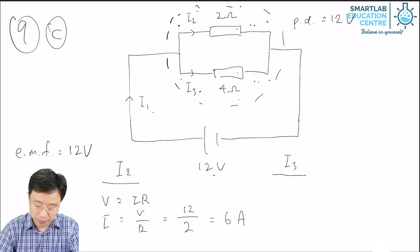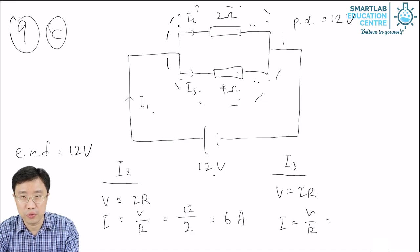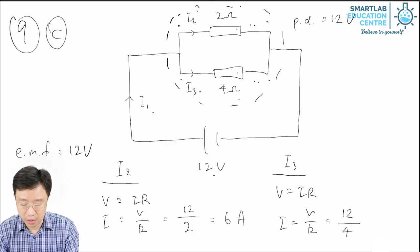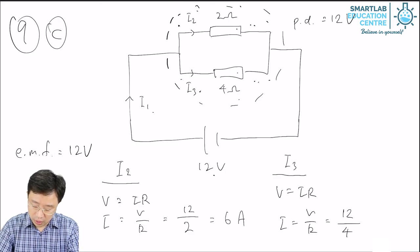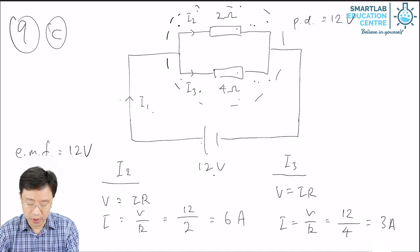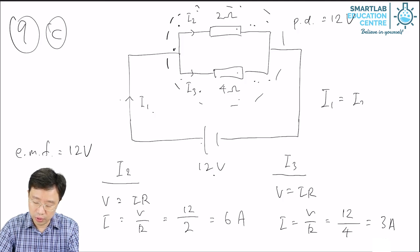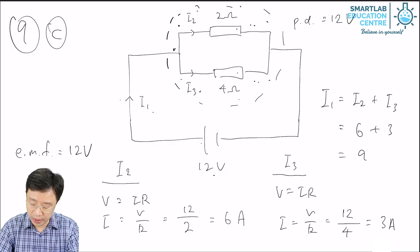For I3, it is similar. The PD across the 4-ohm resistor is also 12 volts, and its resistance is 4 ohms, so the current I3 is 3 ampere. Now, I1 is the current flowing out from the electric cell. When it comes to the junction, it splits into I2 and I3. Therefore, I1 is the sum of I2 and I3, which is 6 plus 3, a total of 9 ampere.